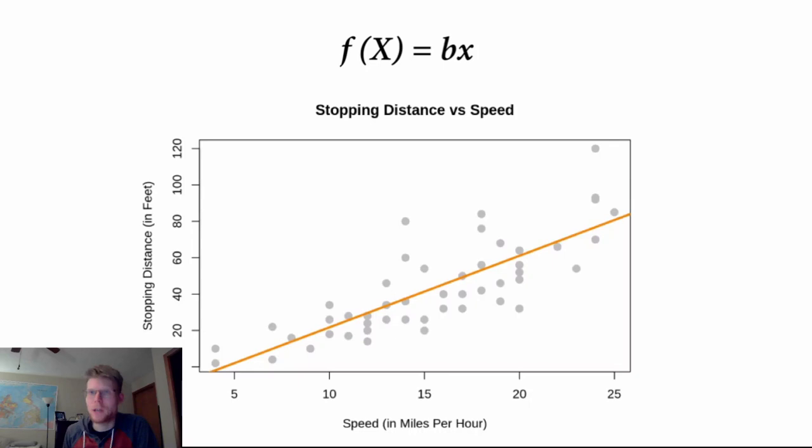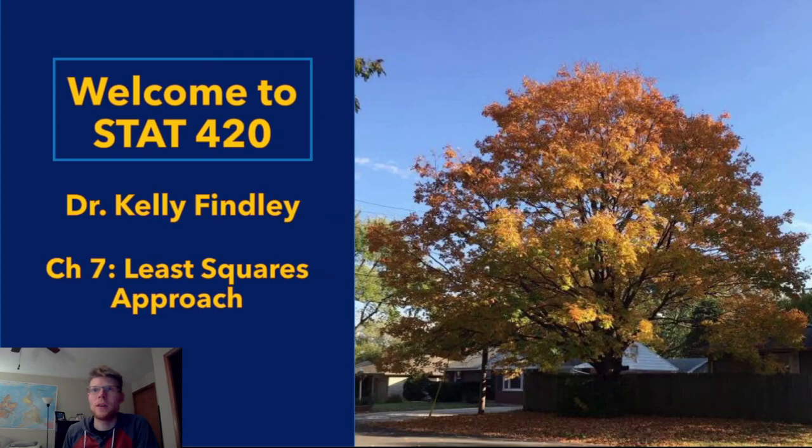If I go back to this picture, obviously we fit a line, but there are obviously a lot of different lines that I could reasonably fit. So the question remains: how do I know that this line really is the best fitting line and not something that's a little bit less steep or a little bit more steep, or maybe even anchored somewhere a little bit different?